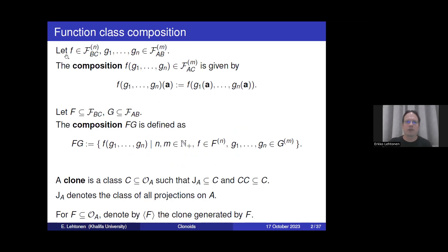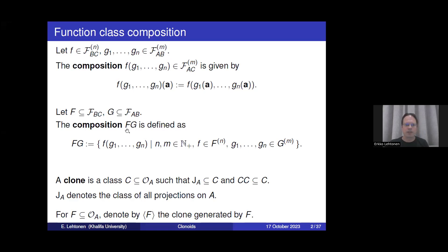This is the usual way how the composition of functions with multiple arguments is defined. But this definition of functional composition can be extended to function classes. We define the composition of two sets of functions: if F is a set of functions from B to C, and G is a set of functions from A to B, the composition is defined as the set of all compositions where the outer function comes from the first class and all the inner functions come from the second class.